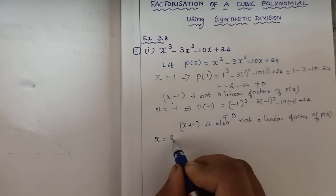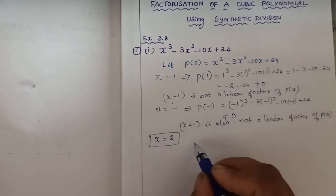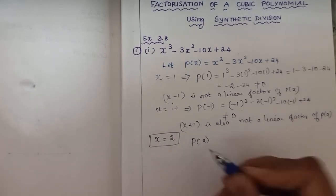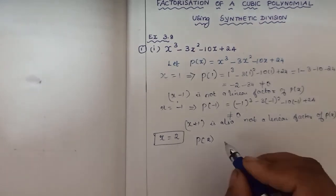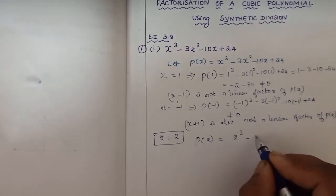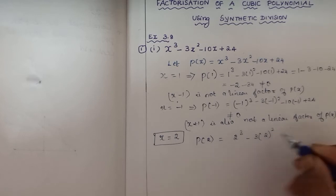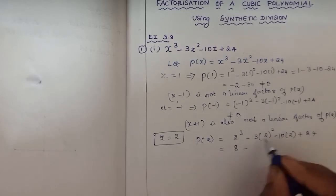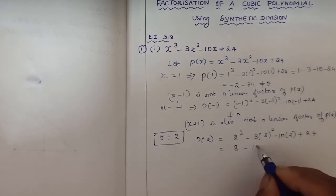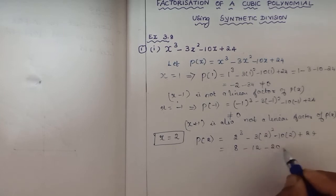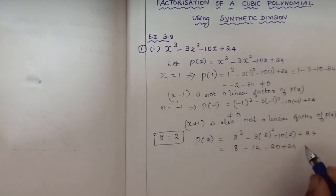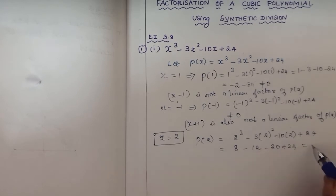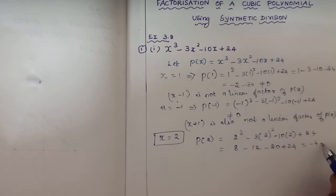Now we check x equals 2. We calculate p(2): 2 cube minus 3 into 2 square minus 10 into 2 plus 24. That gives us: 8 minus 12 minus 20 plus 24. So 8 minus 12 is minus 4, minus 4 minus 20 is minus 24, then minus 24 plus 24 equals 0.